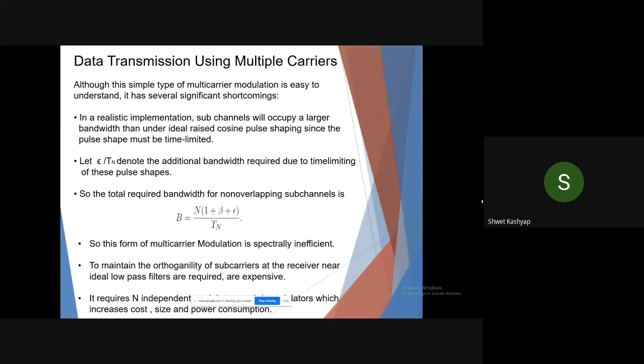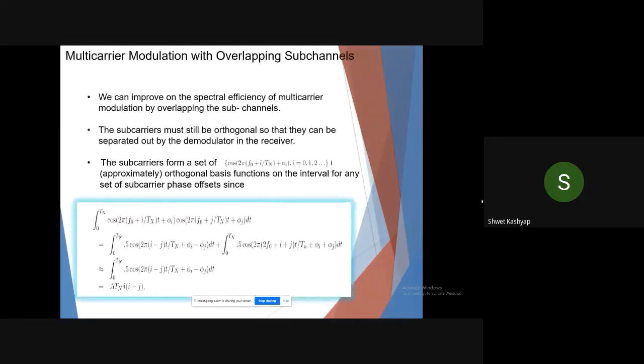The required bandwidth for non-overlapping sub-channels is B equals N times (1 plus beta plus epsilon)/T_n. This form of multi-carrier modulation is especially inefficient. To maintain the orthogonality of subcarriers at the receiver, near ideal low-pass filters are required, which are very expensive.